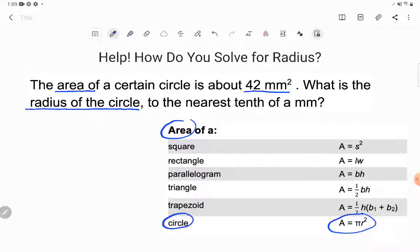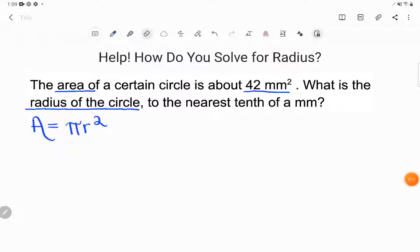So first step for us is just going to be to copy down that formula. Now, some students will make the mistake of just writing the right-hand side, pi r squared, but don't be that student because that would be a mistake. It's important to write the entire formula, the left and the right-hand side, because depending on what letter we're solving for, we're going to work this differently and we need both sides of the equation.